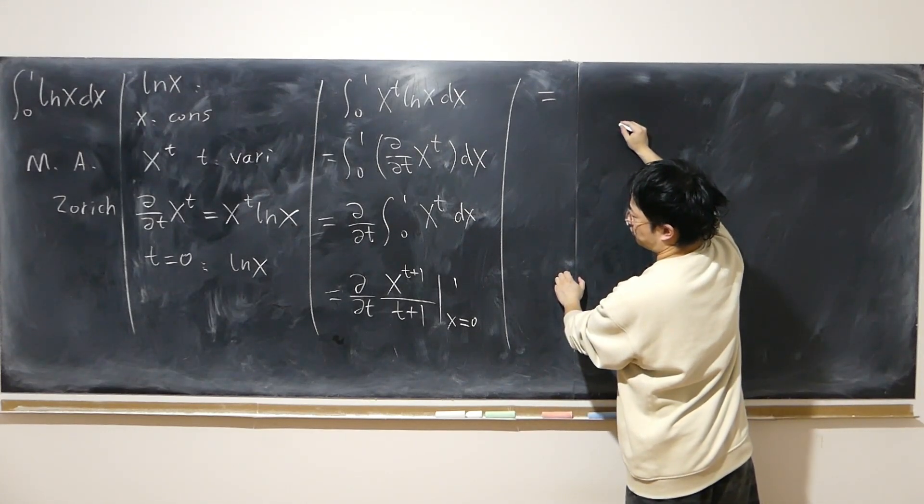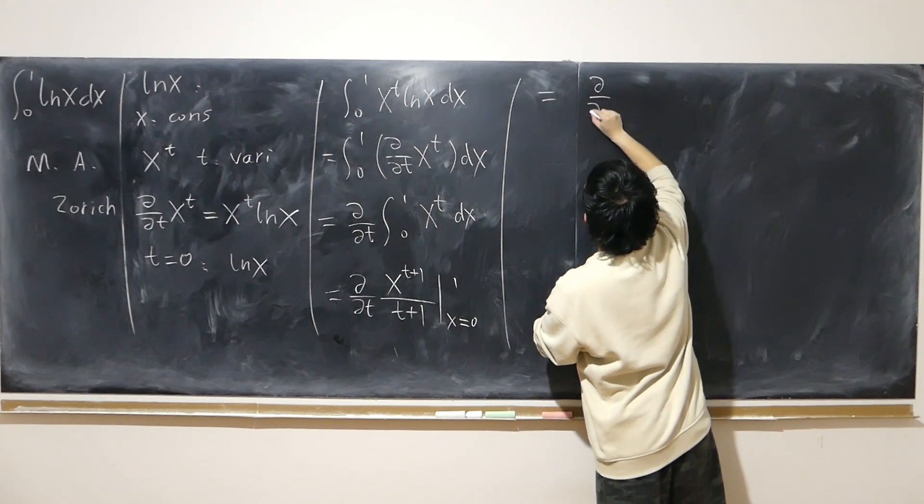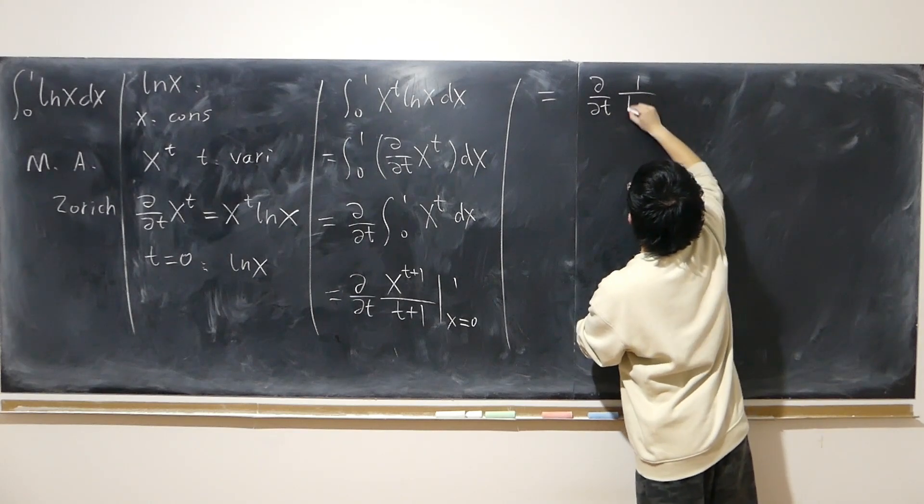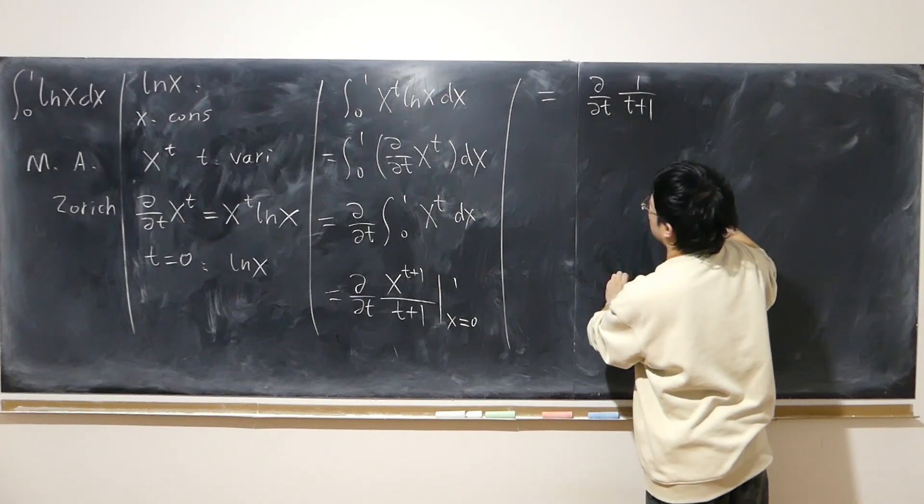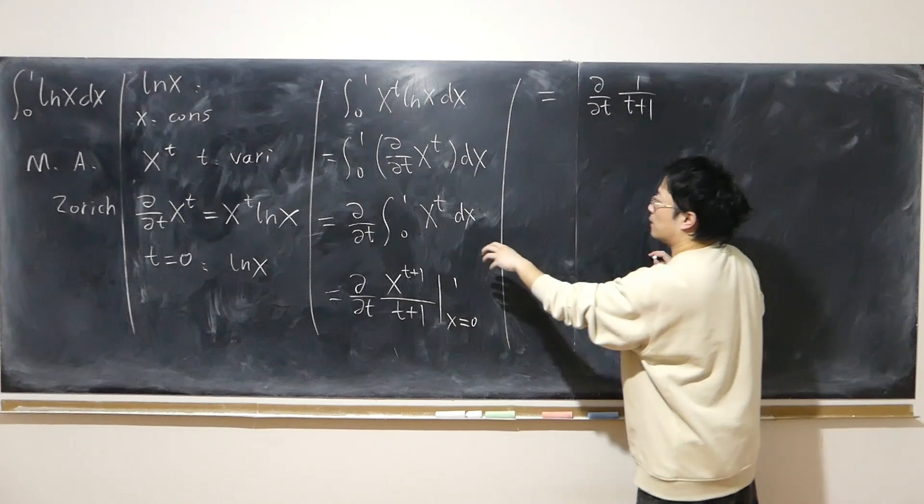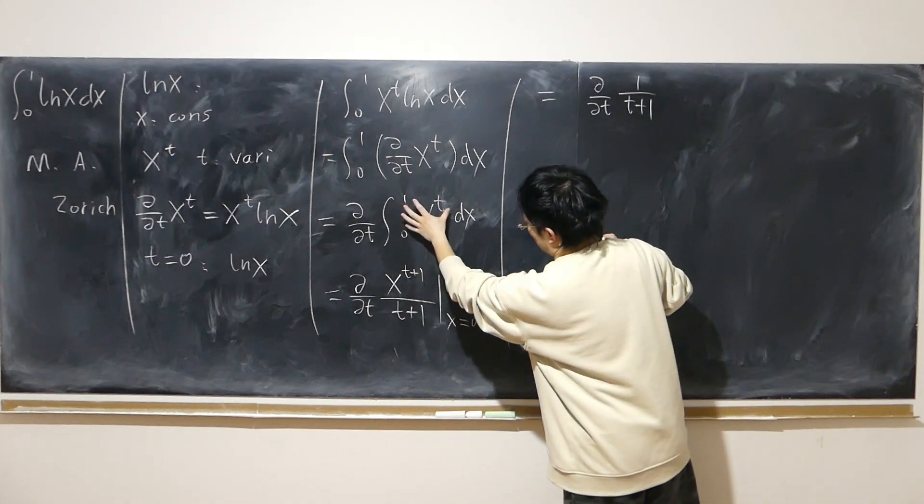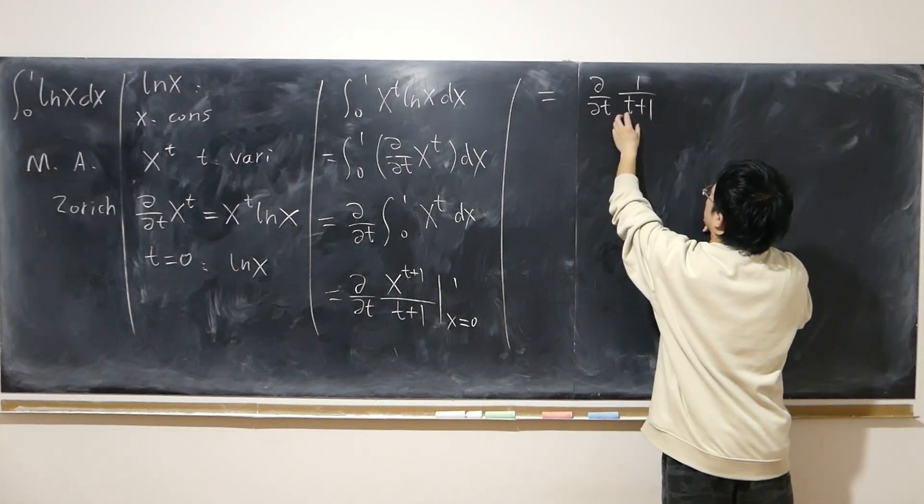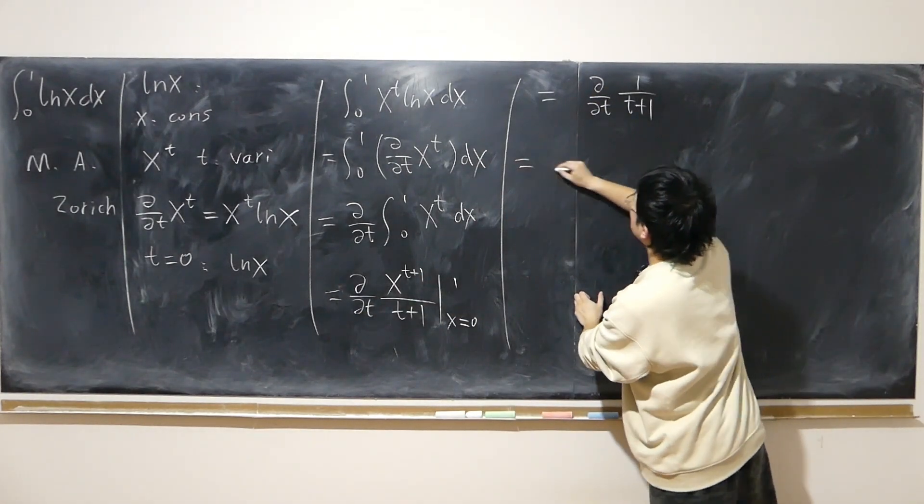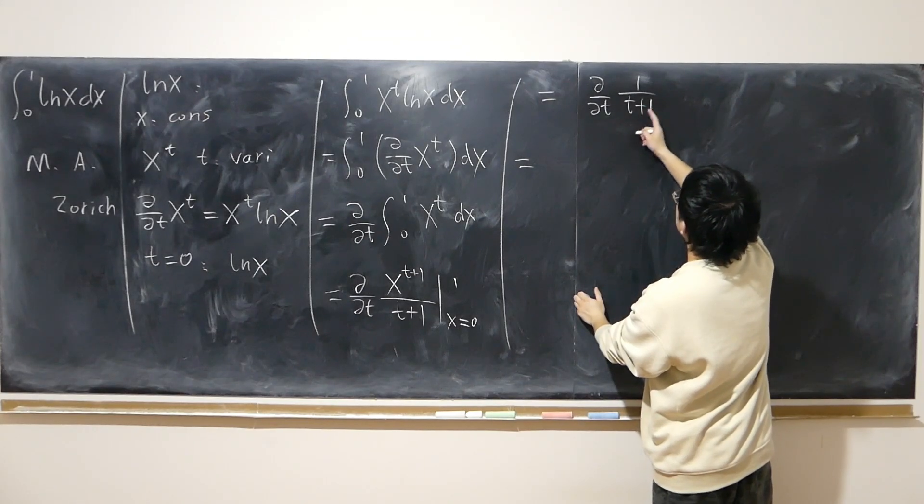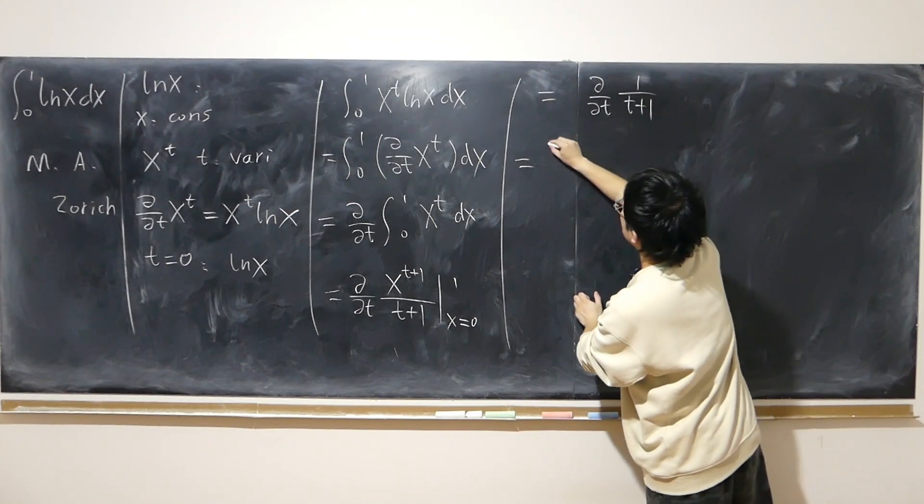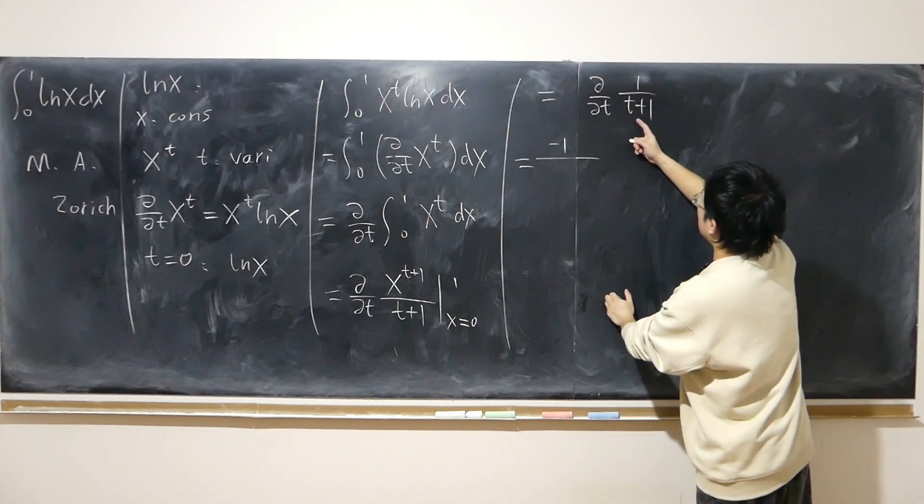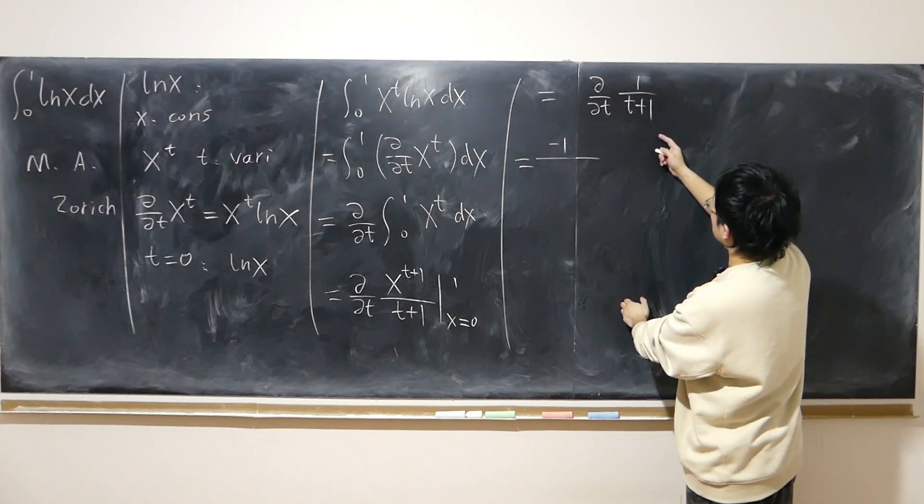So what is that? 1 over t plus 1. Remember, like I said, first integration, then we do differentiation. The differentiation, last step. This is t plus 1 to the power of negative 1. Therefore, we just use negative 1. So negative 1 reduced by one, negative 2.